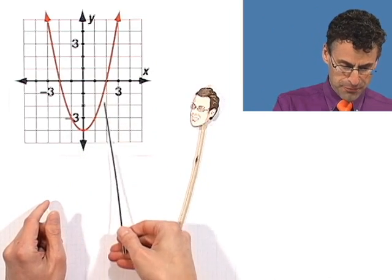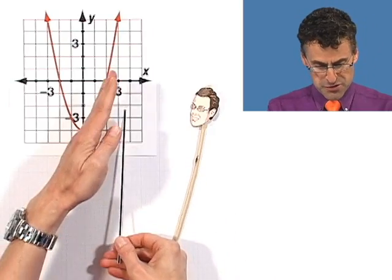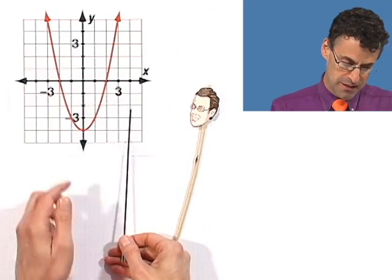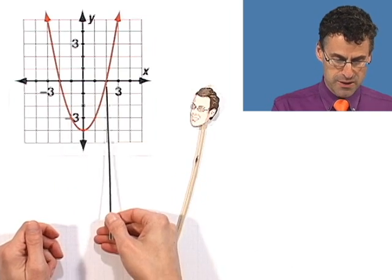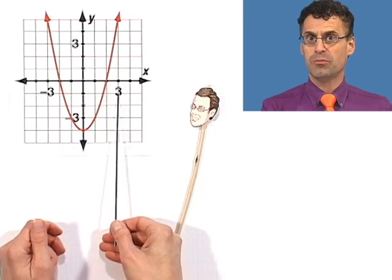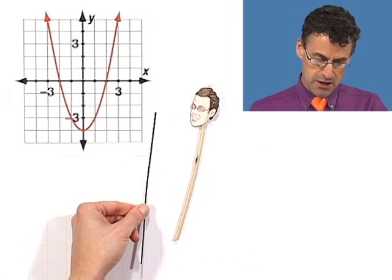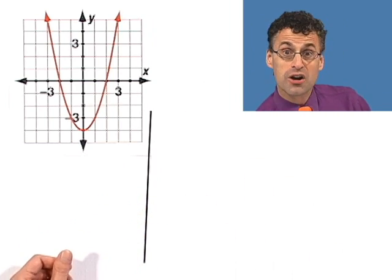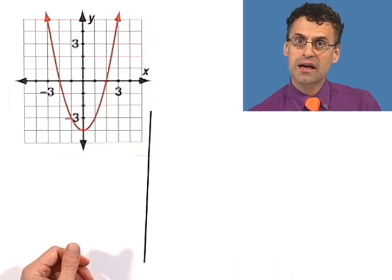If you look at the graph, it keeps getting bigger and bigger, going further and further out to the right, and further and further out to the left, with all these points in between. So every single x value is allowable. Think about the corresponding equation for a parabola — it's going to be a quadratic. You can take any number, square it, add or subtract a constant times the number, then add another constant.